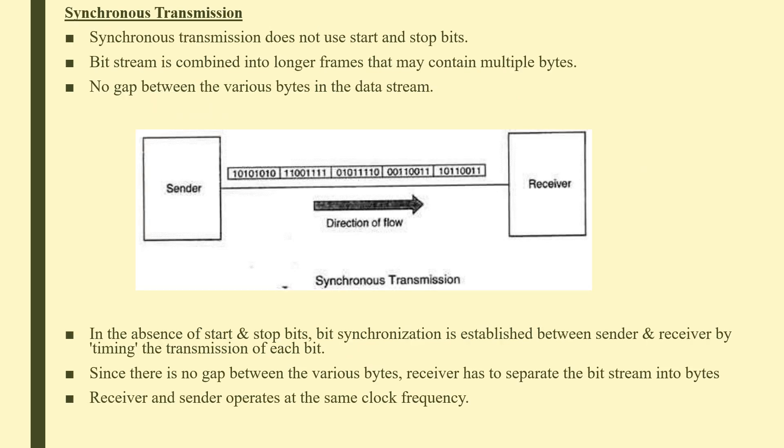Synchronous transmission does not use start and stop bits. Instead, the bit stream is combined into longer frames that may contain multiple bytes, with no gap between bytes. Bit synchronization is established by timing the transmission of each bit — sender and receiver use the same timing. The receiver must separate the bit stream into bytes, and both sides operate at the same clock frequency to receive data error-free.